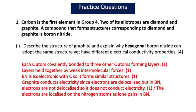For the answer: if you said each carbon atom covalently bonds to three other carbon atoms forming layers, you get one mark. If you said these layers are held together by weak intermolecular forces, you get the second mark. If you say that boron nitride is isoelectronic with carbon so it forms a similar structure, you get the third mark. If you said graphite conducts electricity since the electrons are delocalized, but in boron nitride the electrons are not delocalized so it doesn't conduct electricity, you get the fourth mark. You could also say that the electrons are localized on the nitrogen atoms as lone pairs in boron nitride and are not delocalized across the whole structure.